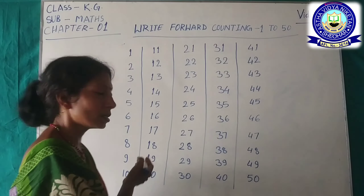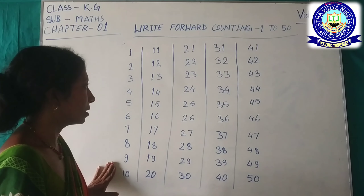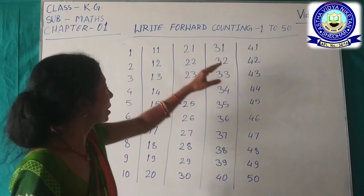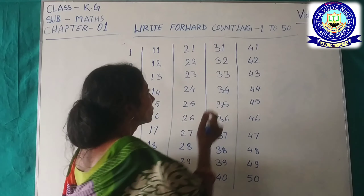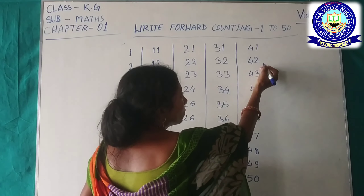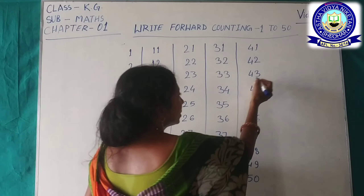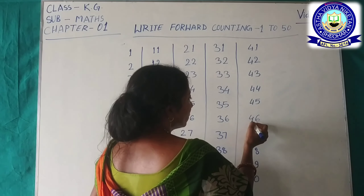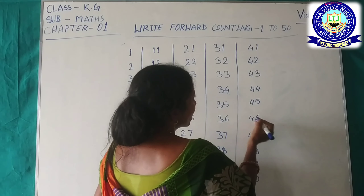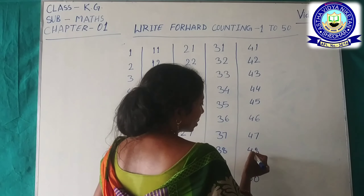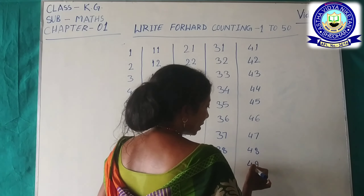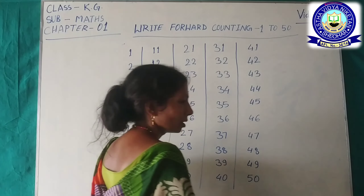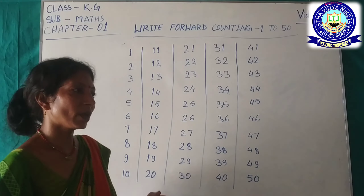Now we have 41 written. 41 is the same 9 digits — 4 is the same. 41, 42, 43, 44, 45, 46, 47, 48, 49, 50.